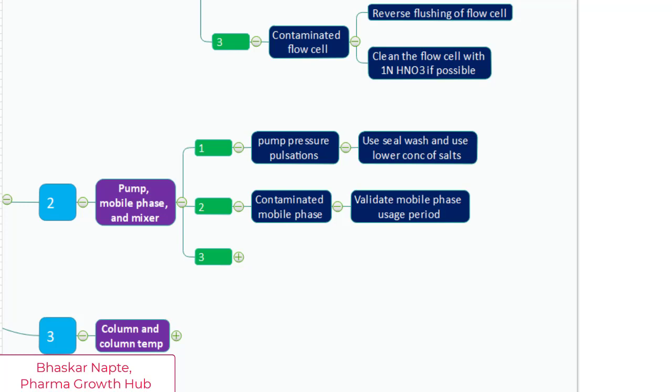release the reservoirs and HPLC flow path excluding the column. You must remove the column and flush the entire system with water followed by isopropyl alcohol and then again with water. You can also use hot water for the efficiency of the cleaning.